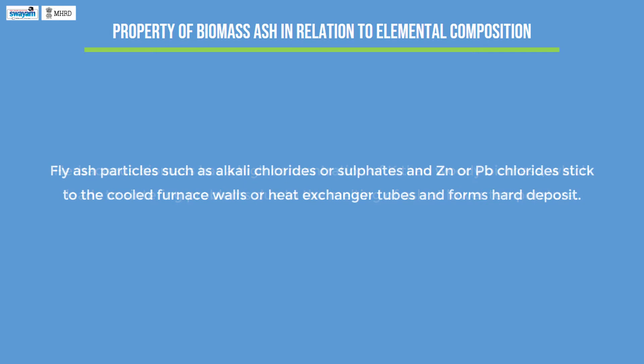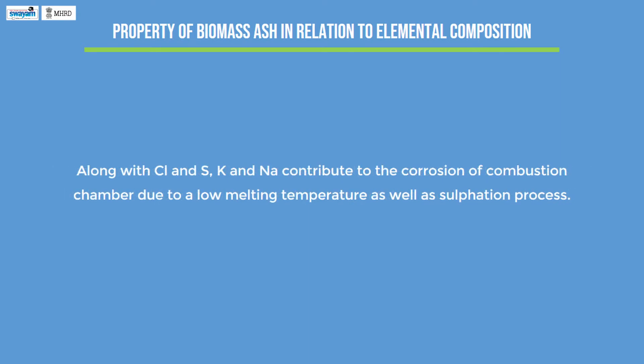The fly ash particles, such as alkali chlorides or sulphates and zinc or lead chlorides, stick to the cooled furnace walls or heat exchanger tubes and form a hard deposit.